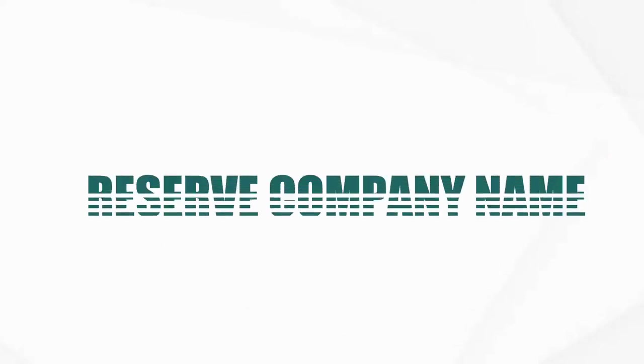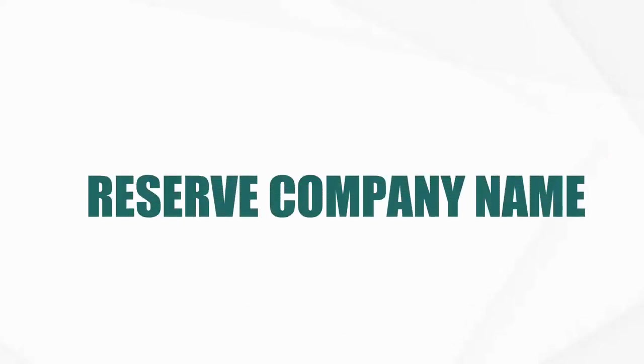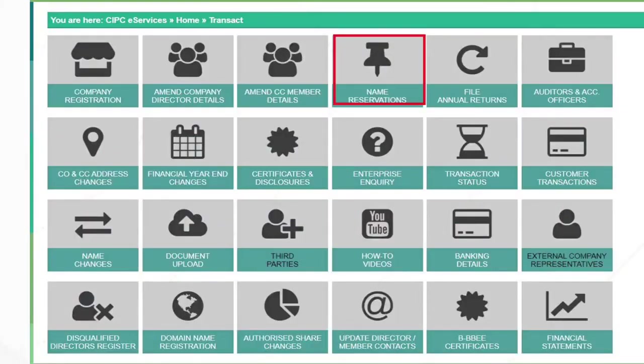Log back into your CIPC profile using 'Customer Login' and enter your credentials. You are then ready to reserve the company name — that is the first step before you do the complete registration. Go to 'Transact' and click on 'Name Reservation'.